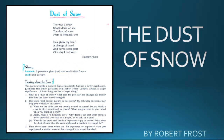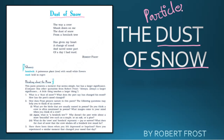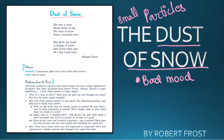What do you understand by the term 'dust of snow'? Dust of snow means small particles of snow. This whole poem is about a poet who was in a very bad mood, but due to this dust of snow — the small particles of snow — there is some change in his attitude, and that's what we are going to look at in the poem.